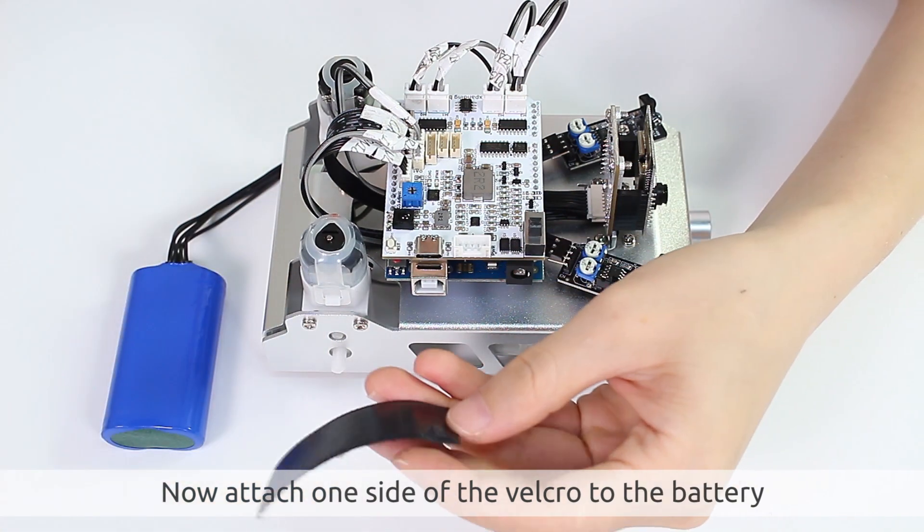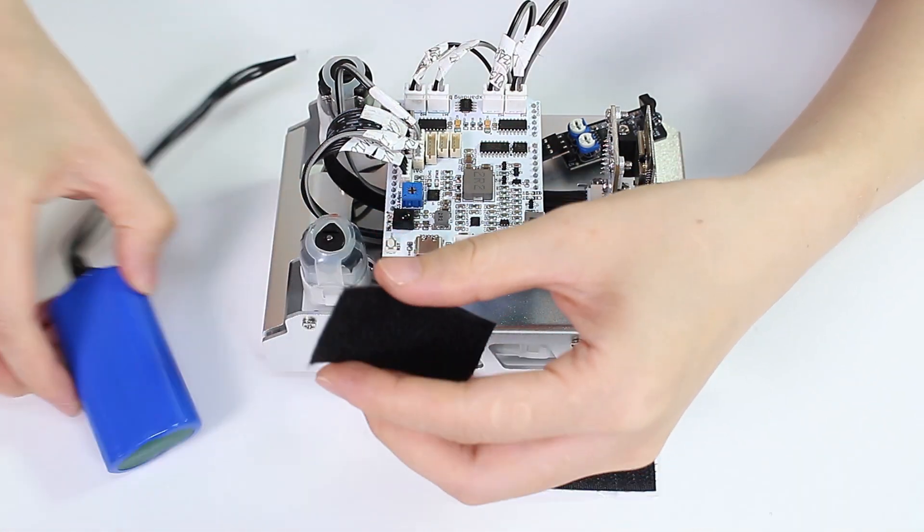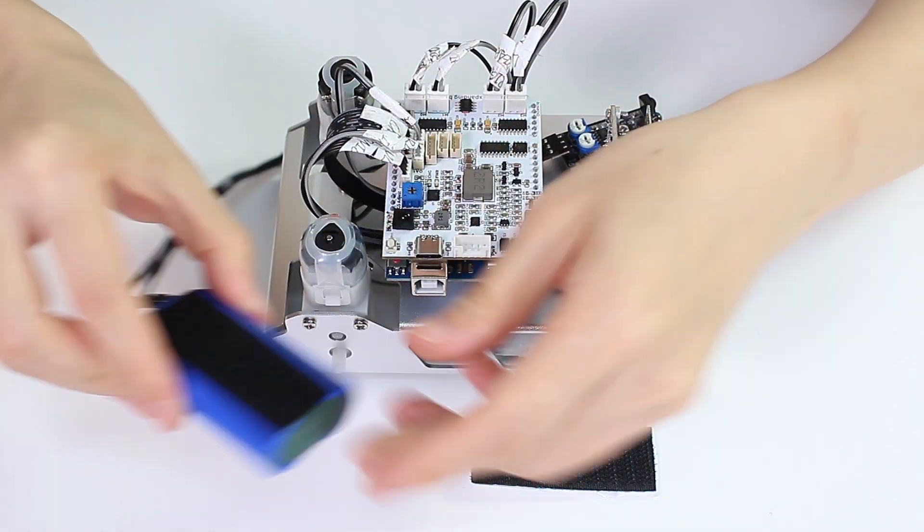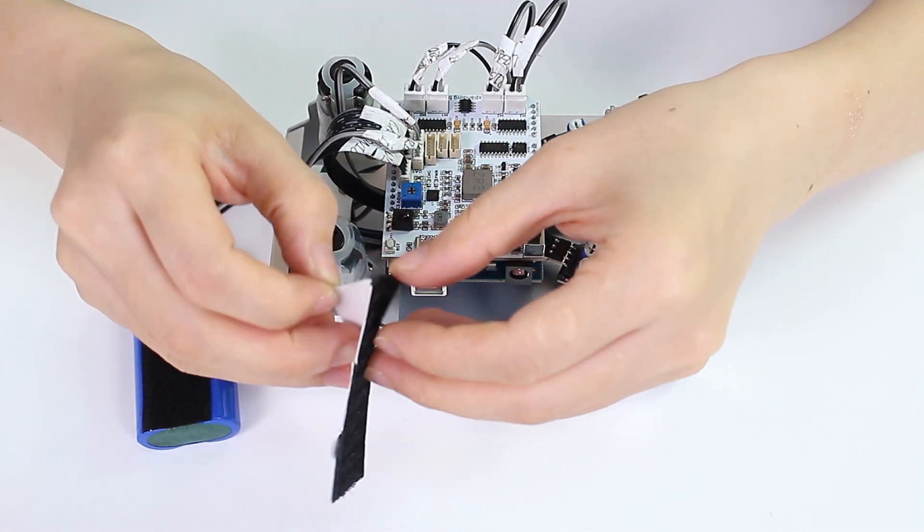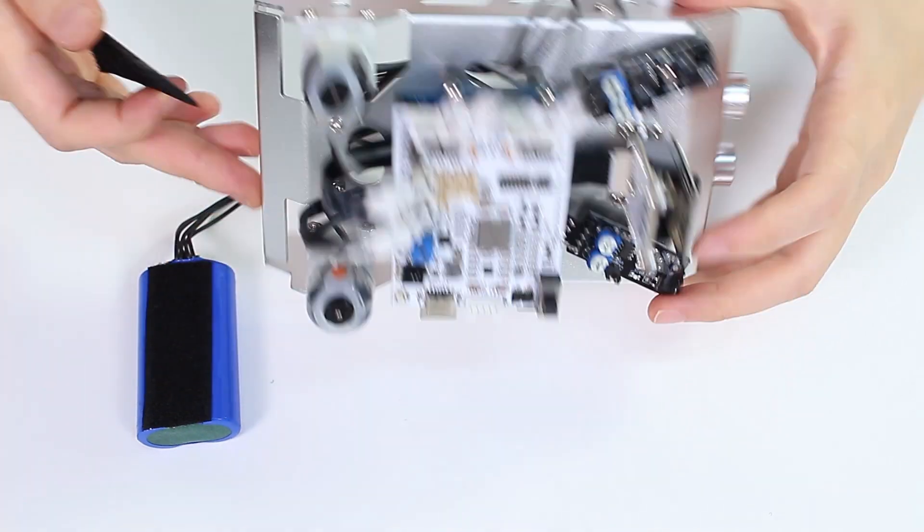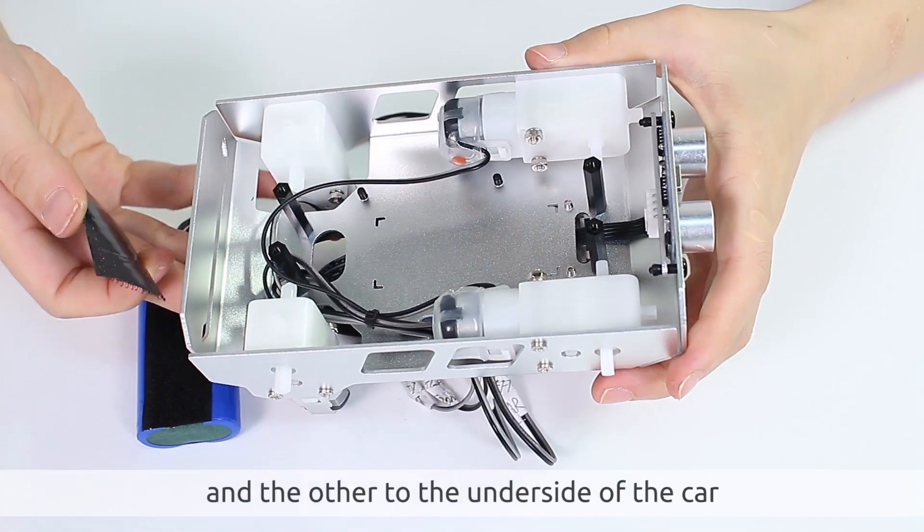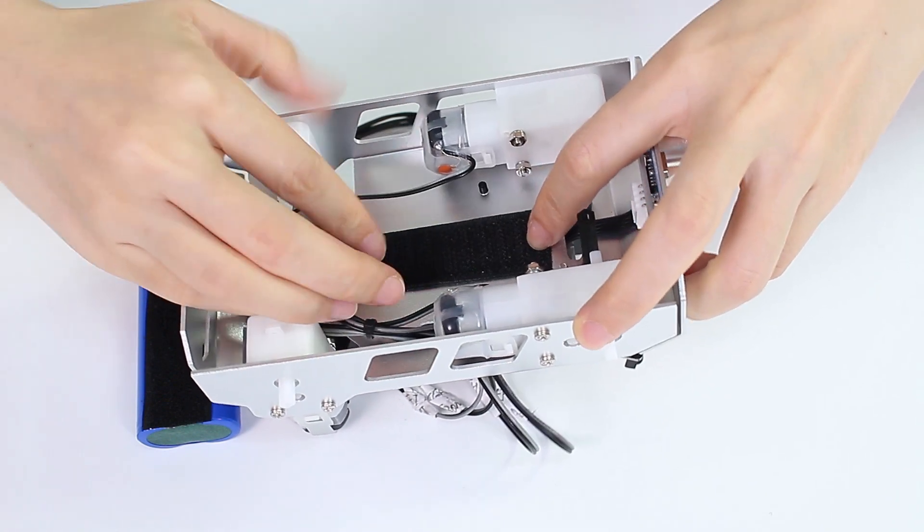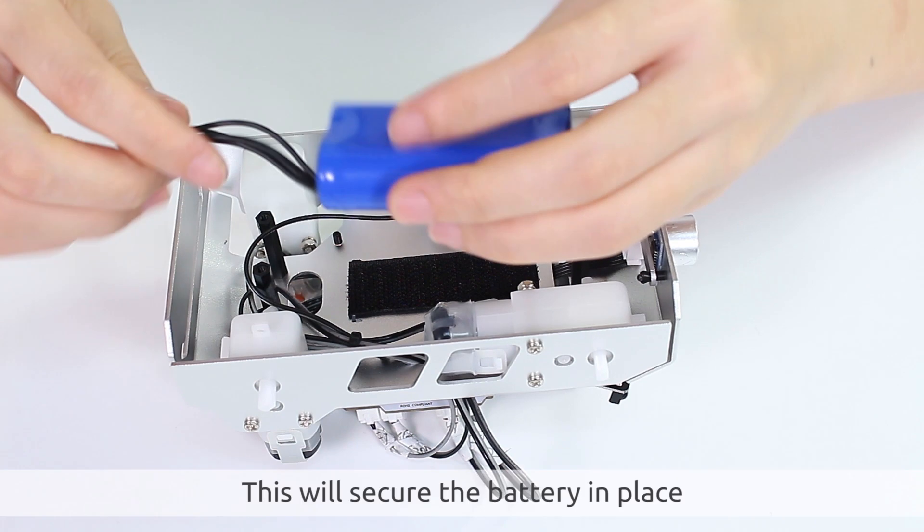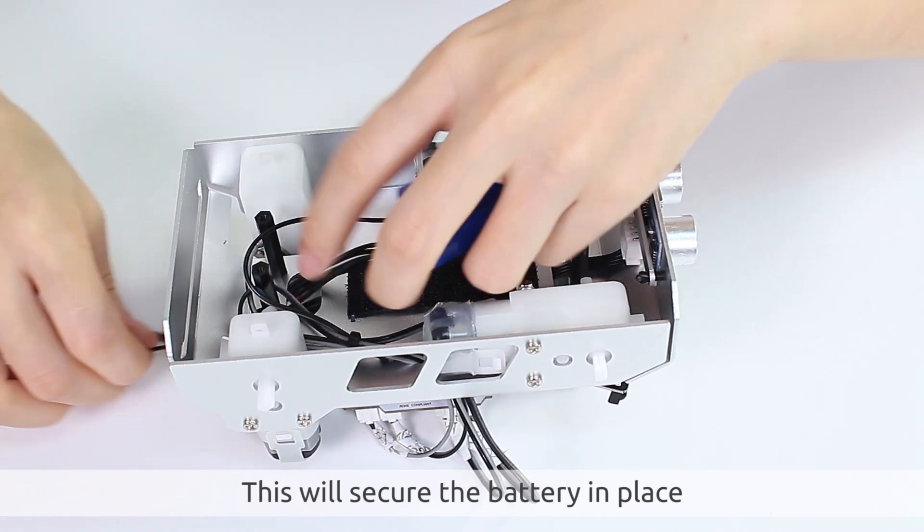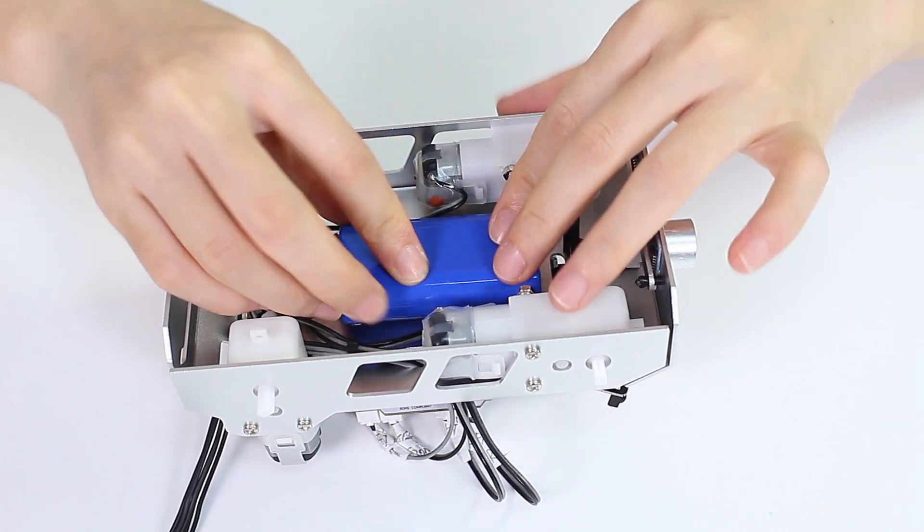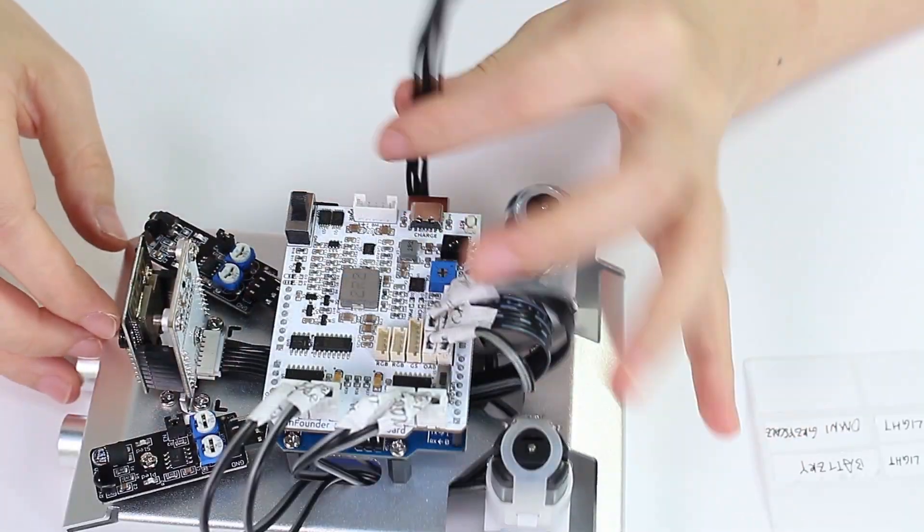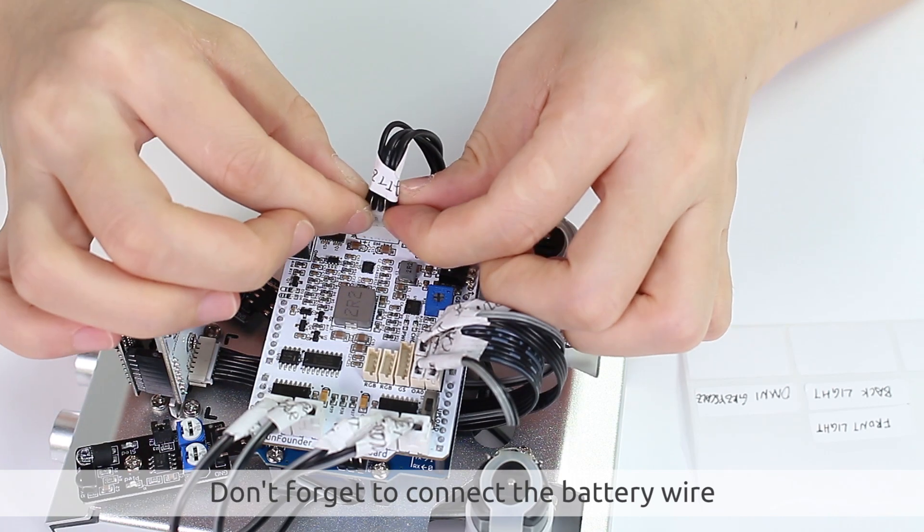Now attach one side of the Velcro to the battery and the other to the underside of the car. This will secure the battery in place. Don't forget to connect the battery wire.